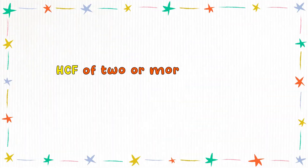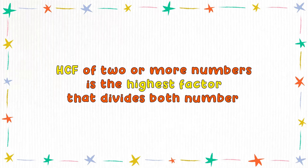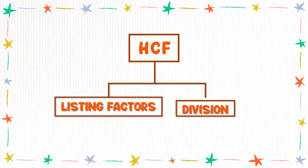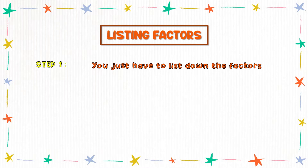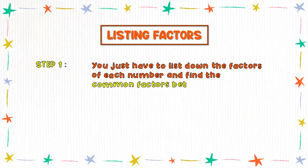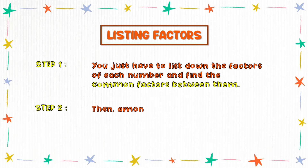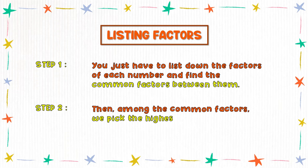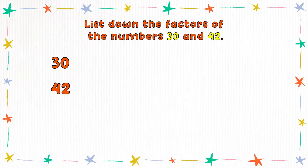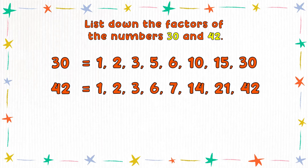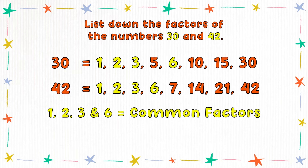HCF of two or more numbers is the highest factor that divides both numbers. You can find the HCF using two methods. In the listing factors method: Step 1, list down the factors of each number and find the common factors between them. Step 2, among the common factors, pick the highest number. In our case, let's list down the factors of 30 and 42. As we can see, 1, 2, 3, and 6 are the common factors of 30 and 42. Among these, 6 is clearly the highest common factor.